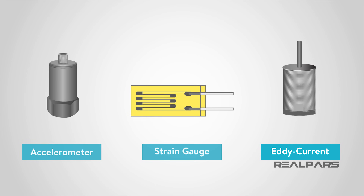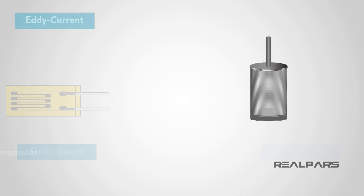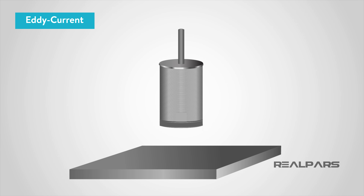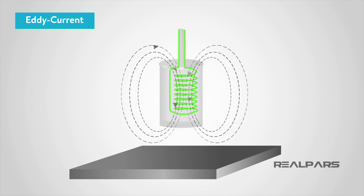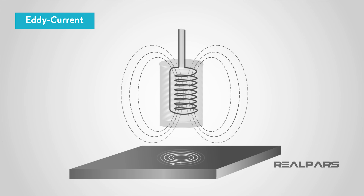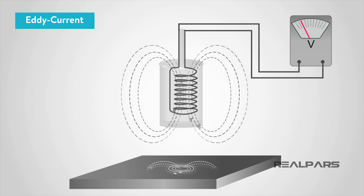The last type of vibration sensor we will discuss is an eddy current or capacitive displacement sensor. Eddy current sensors are non-contact devices that measure the position and or change of position of a conductive component. These sensors operate with magnetic fields. The sensor has a probe which creates an alternating current at the tip of the probe. The alternating current creates small currents in the component we are monitoring, called eddy currents. The sensor monitors the interaction of these two magnetic fields, and as the field interaction changes, the sensor will produce a voltage proportional to that change.